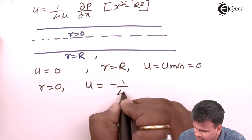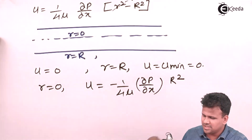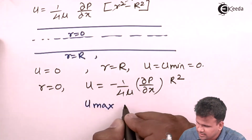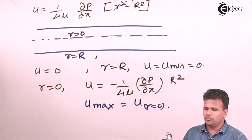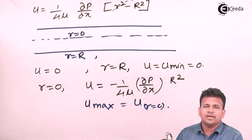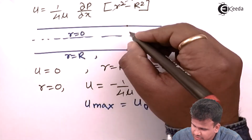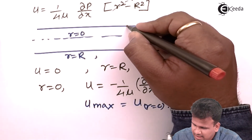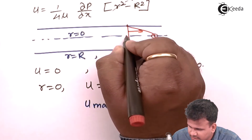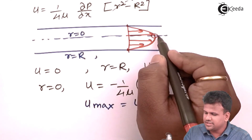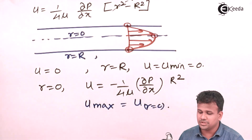This is the maximum velocity: u_max occurs when r equals 0. If we plot this velocity distribution, it is parabolic in nature. At the extreme points (the walls), velocity is 0; in between, velocity is maximum. The graph is a parabolic curve where velocity is maximum at the center and zero at both ends — this is the velocity distribution in laminar flow.